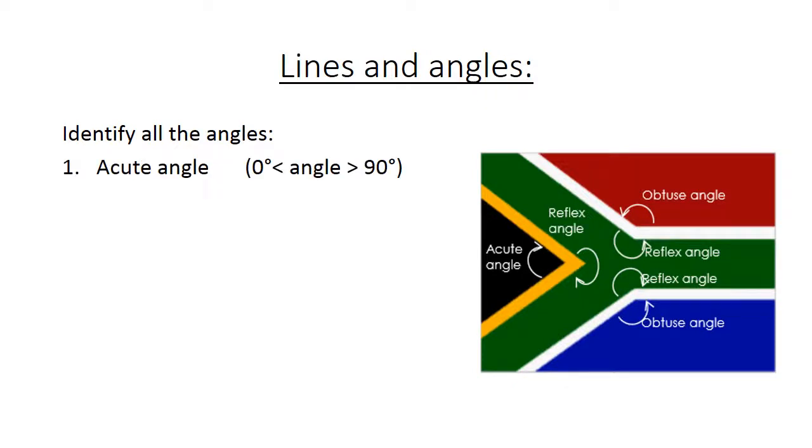Acute angle is an angle greater than 0 degrees but less than 90 degrees. And there we have the acute angle.